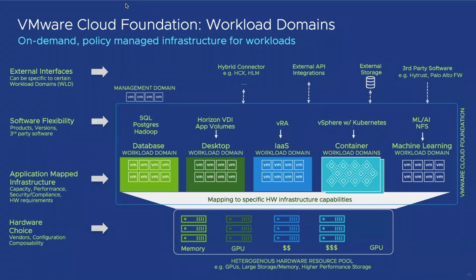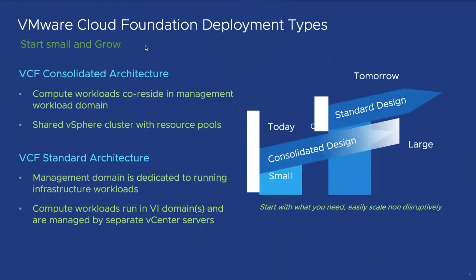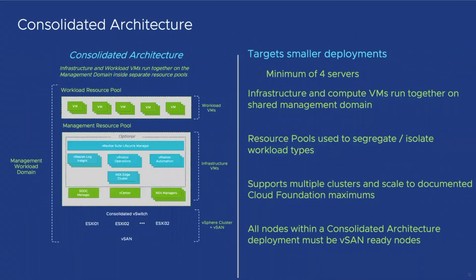Organizations that aren't ready for a full-blown VCF architecture can start with a smaller, consolidated deployment. VCF is available in two types of deployment. The consolidated deployment is recommended for somebody who wants to start with a small deployment — like a POC or a lab — and later scale up to standard architecture. Consolidated architecture consists of a minimum four nodes, where the management workload domain and workload domain share resources.